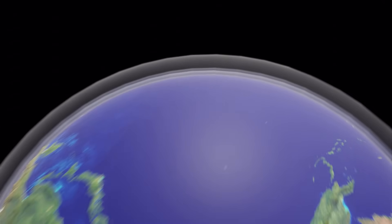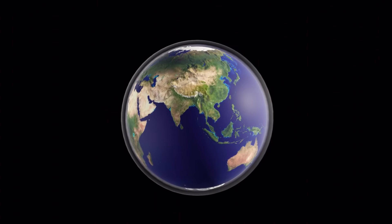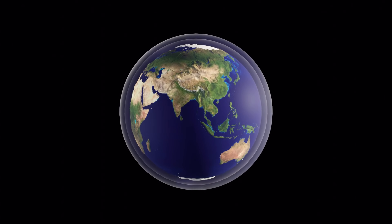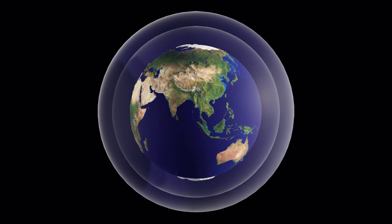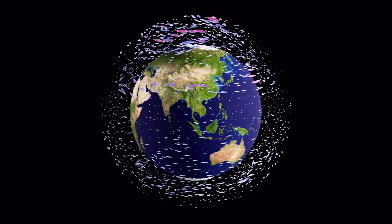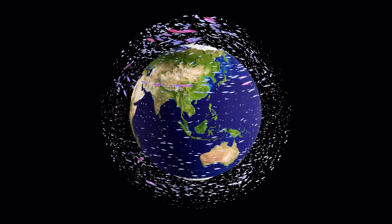These layers are less than 100 kilometers above the surface, so let's increase the vertical scale so we can see how they each move. Each layer has distinct, beautiful circulation patterns.